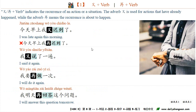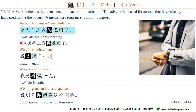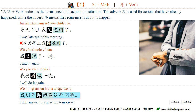语法点一: The adverb 又 or 再 plus verb indicates the recurrence of an action or situation. For example, 今天早上我又迟到了 (I was late again this morning). Note: 今天早上我再迟到了 is grammatically wrong. The adverb 又 is used for actions that have already happened. For example: 我又说了一遍 (I said it again). The adverb 再 means the recurrence is about to happen: 我要再做一次 (I will do it again), 我明天再回答这个问题 (I will answer this question tomorrow).